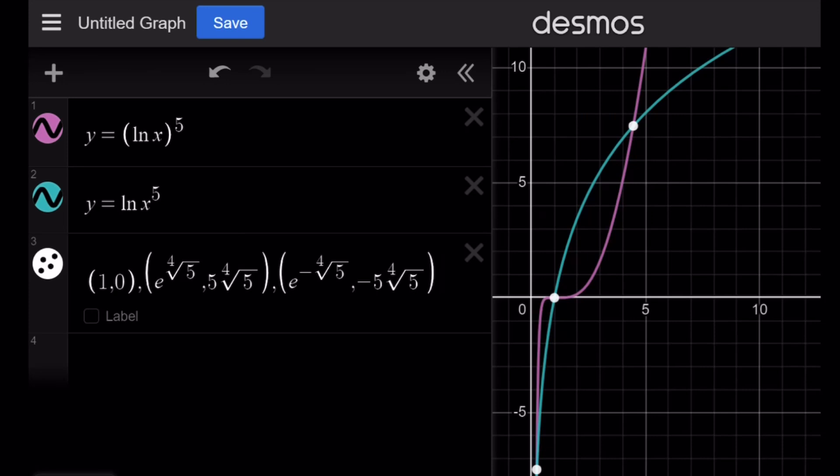And notice that they intersect at three points. We talked about three different solutions. One, e to the 4th root of 5, and e to the power negative 4th root of 5.